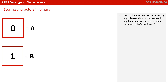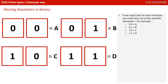If each character was represented by only one binary digit, then we could only store two possible characters, perhaps A and B. If we had two bits for each character, then we could store four possible characters, because 00 might be A, 01 B, 10 C, and 11 D.